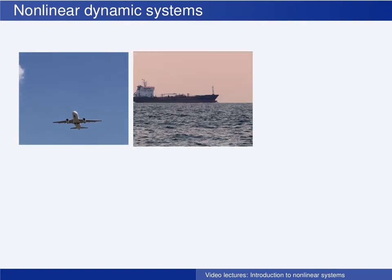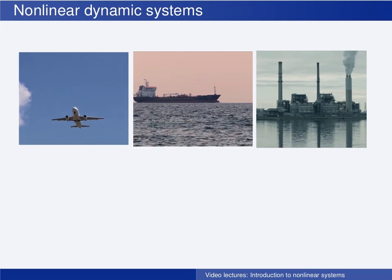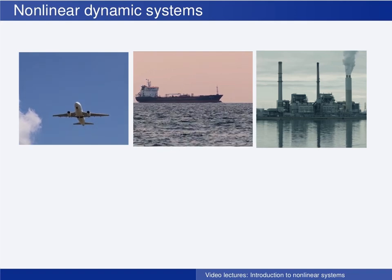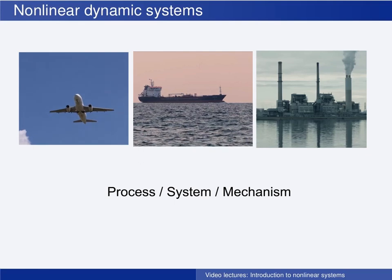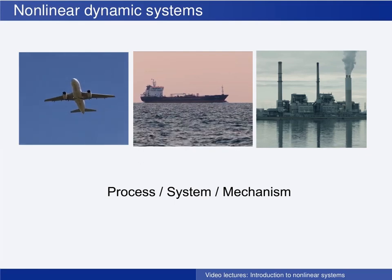When designing a control system, we are typically given a physical system that we want to control. This may for instance be a plane, or a ship, or a chemical process, and this is often called the process, the system, or the mechanism to be controlled.